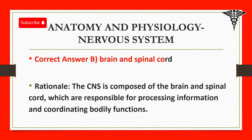Correct answer: B. Brain and spinal cord. Rationale: The CNS is composed of the brain and spinal cord, which are responsible for processing information and coordinating bodily functions.